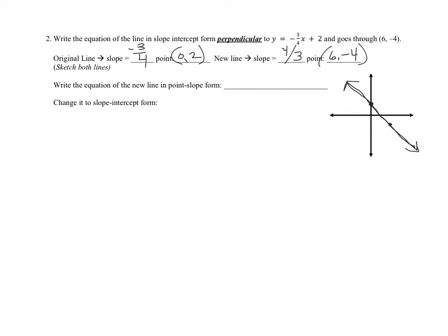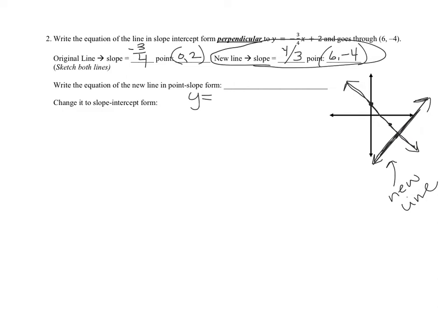The perpendicular line goes through (6, negative 4) — right 6, down 4. It must be perpendicular, angled accordingly. The y-intercept of the new line will also be negative. Writing the equation in point-slope form using the new line's information: y plus 4 equals 4/3 times (x minus 6).